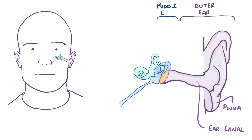Next is the middle ear, which is a tiny chamber that houses the tiny ear bones: the malleus, the incus, and the stapes.